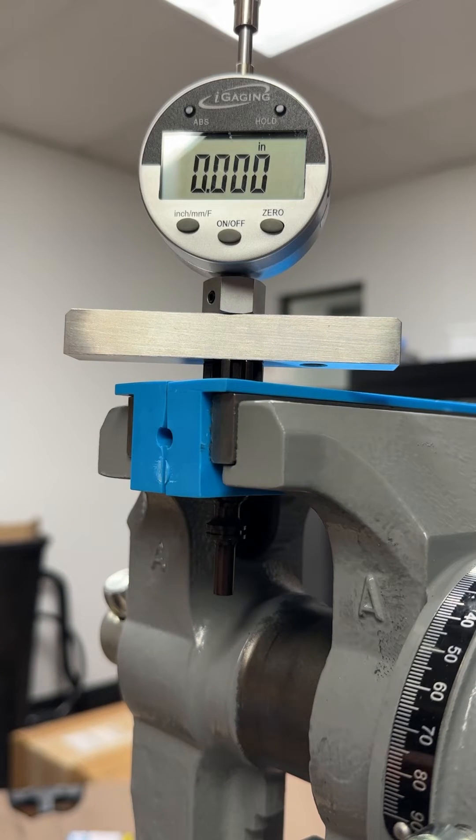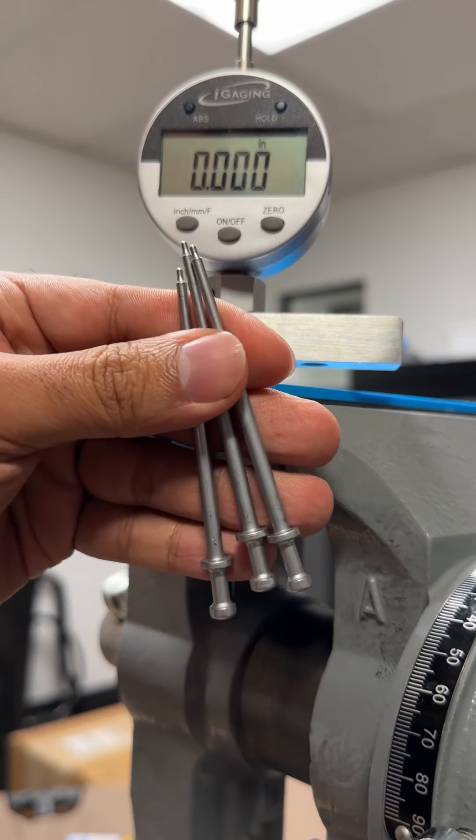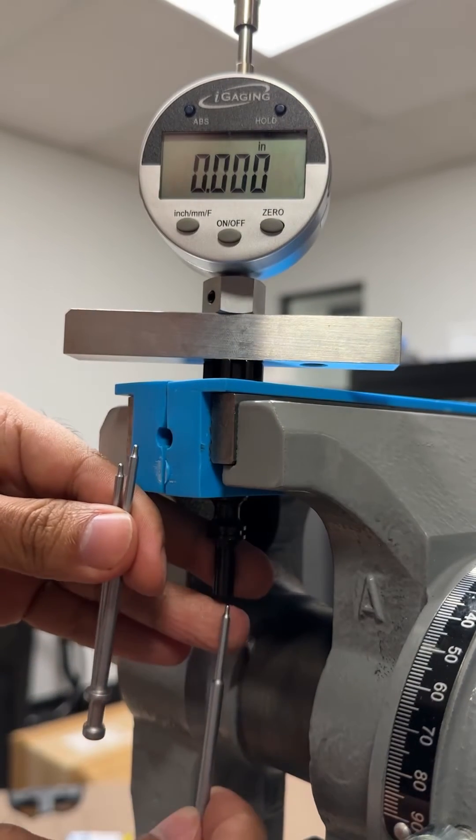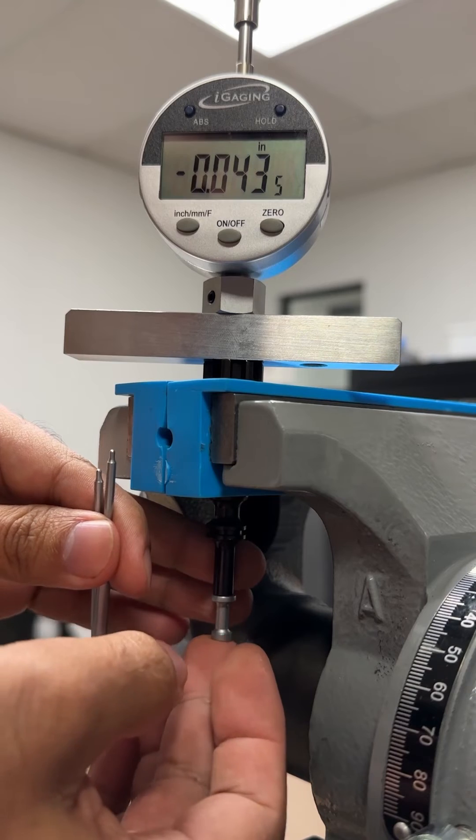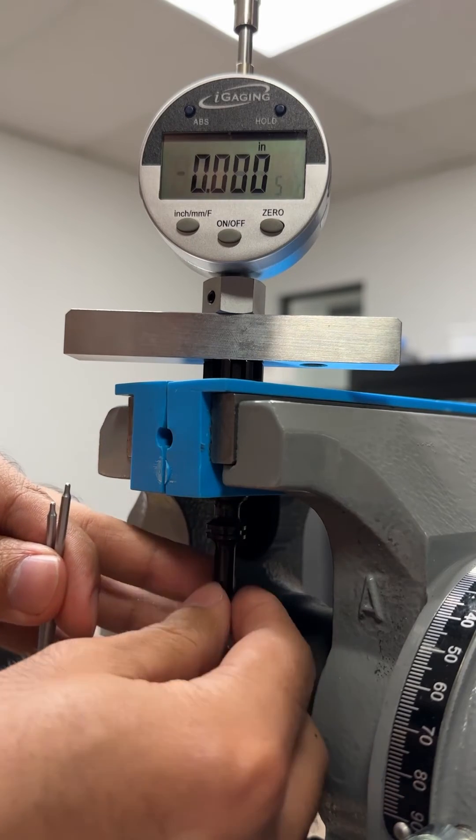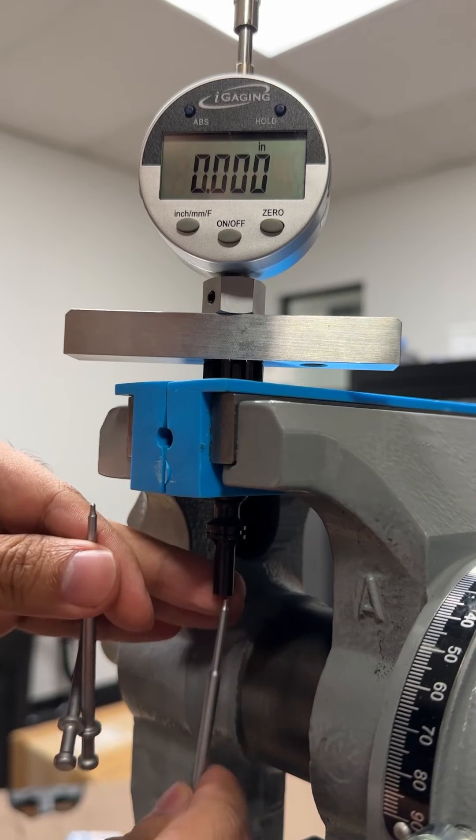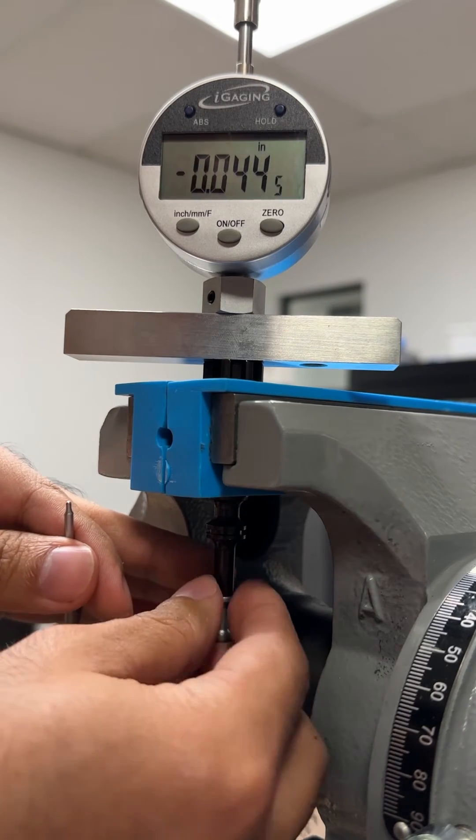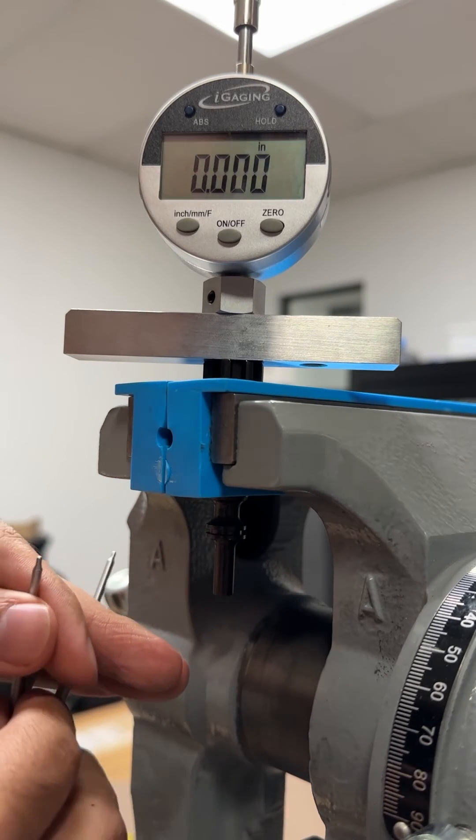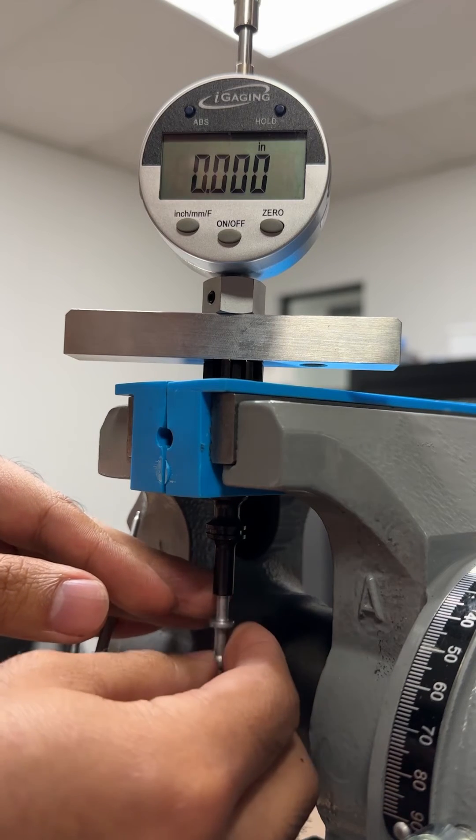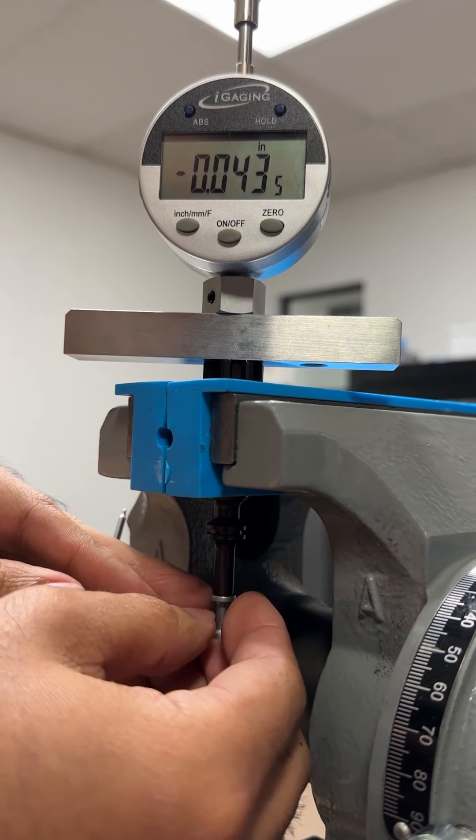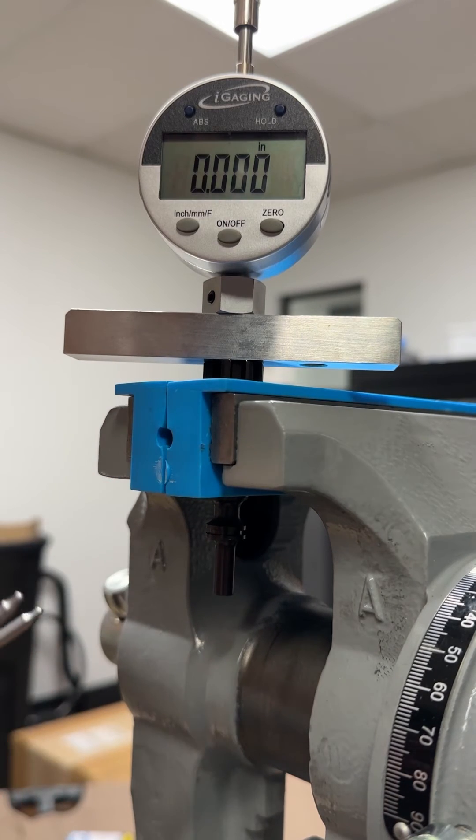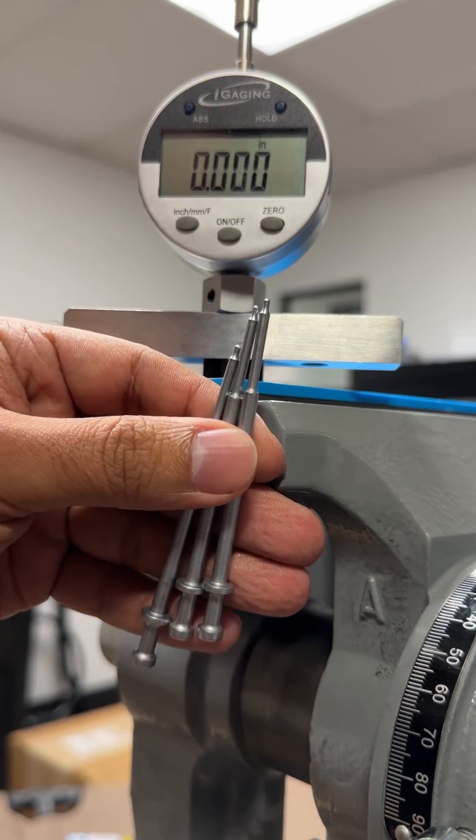Now we're going to take a look at our 7.62x39 firing pins, and you can tell because they have the smaller flange here at the back. This first one measures at 43 and a half, 44 and a half, and 43 and a half. So when we designed our firing pins, we spec'd between 40 and 50 thou of firing pin protrusion.